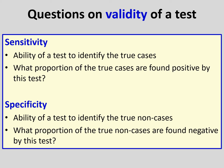When we think about validity, we think about sensitivity and specificity. Sensitivity is the ability of a test to identify the true cases — what proportion of the true cases are found positive by this test of interest? Specificity is the ability of a test to identify the true non-cases (true negatives) — what proportion of the true non-cases are found negative by this test of interest?